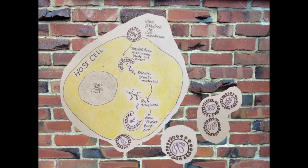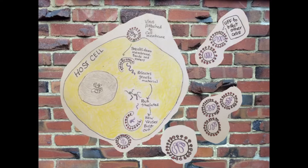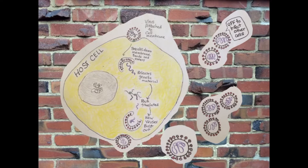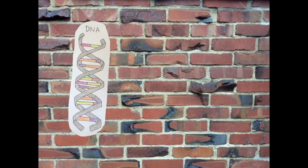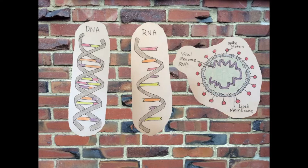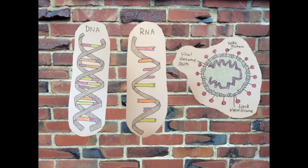The virus makes copies of itself, then bursts out of the cell to infect new cells. Viruses can have genetic material in either DNA or RNA form. SARS-CoV-2 is an RNA virus, also known as a retrovirus.